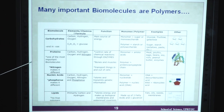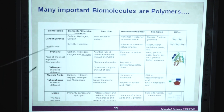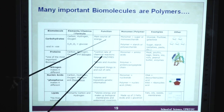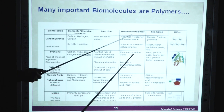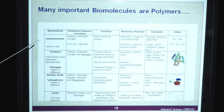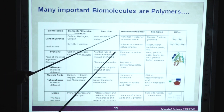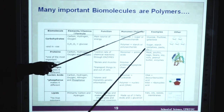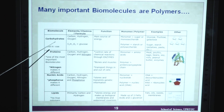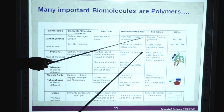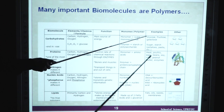Many important biomolecules are polymers. We have different biomolecules like carbohydrates, proteins, nucleic acids and lipids. In the case of carbohydrates, they are made up of carbon, hydrogen and oxygen atoms. They are the main source of energy. Their monomeric unit is glucose. Examples include glucose, fructose and galactose — and polymeric examples like sugar, starch, potatoes and pasta.